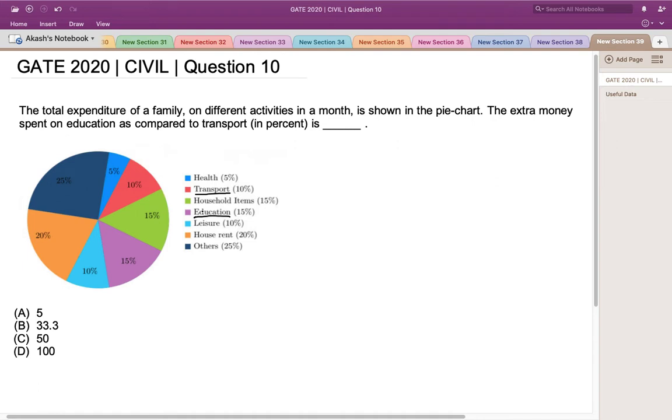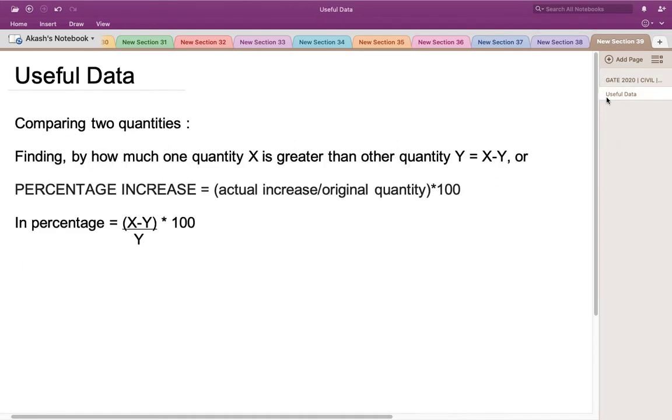To solve this question, let's have a look at the useful data. Whenever we have to compare two quantities and determine by how much one quantity x is greater than the other quantity y, we can simply take the difference of those quantities. Or if we want to calculate it percentage-wise, we find the actual increase in the percentage of that quantity divided by the original quantity times 100.